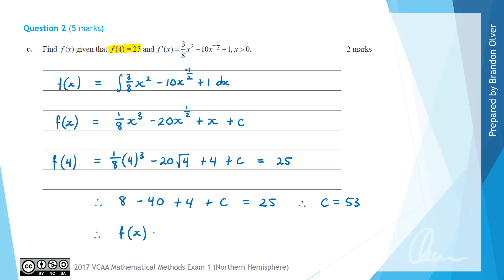Our final step for this question is to state the full rule of f of x as being equal to 1 divided by 8 x cubed minus 20 times the square root of x plus x plus 53. So that is the answer to part c of this question.